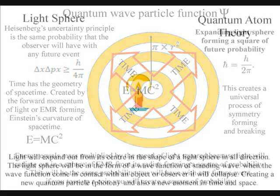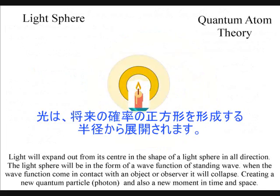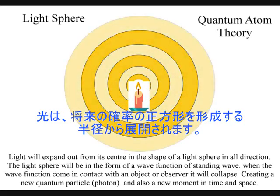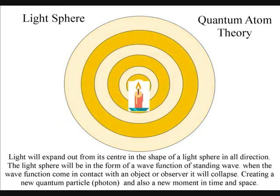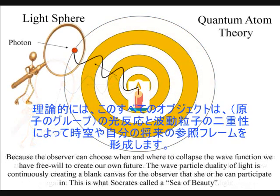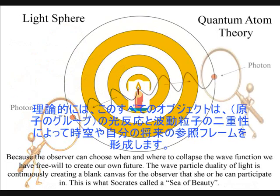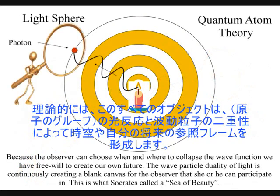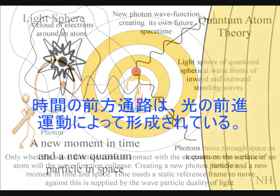We live in a dynamically evolving universe of continuous change because of the probabilistic nature of the wave-particle duality of light. Only if light waves come in contact with an object will they form new photons of quantized energy that will have a unique position in space and time.